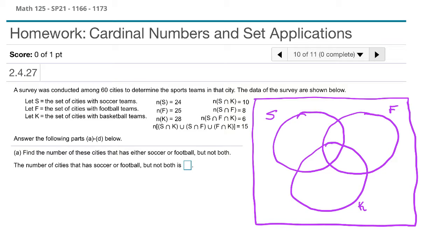Just like before, we want to find the most restrictive values — the ones that correspond to the smallest possible set, ideally just one region. What we see is the intersection of all three sets, S∩F∩K, has a cardinality of 6. That intersection corresponds to the overlap of all three circles, and that tells us that our center region has a total of 6 cities in it.